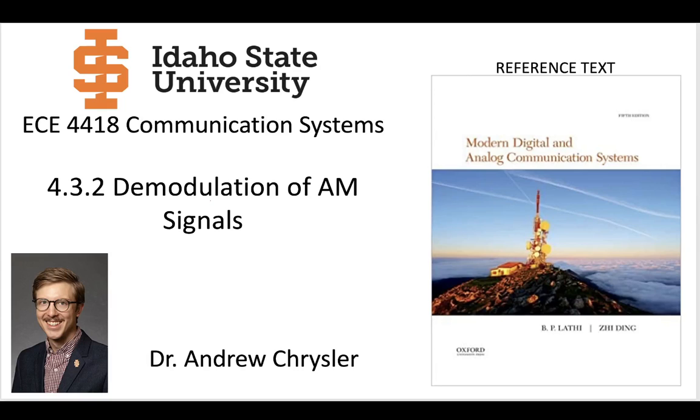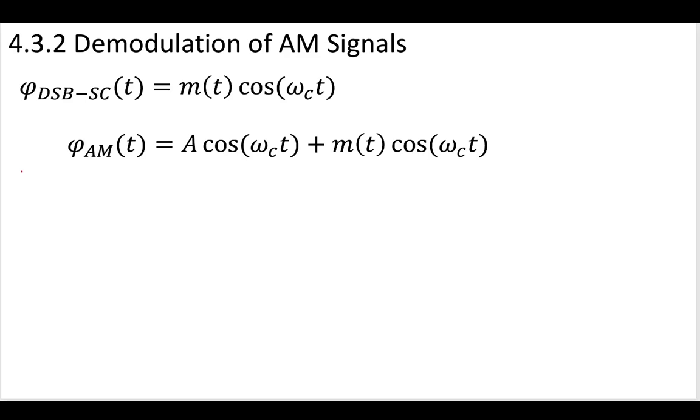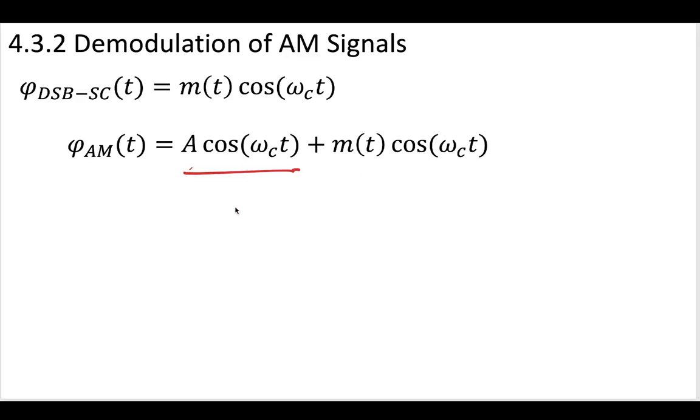So first, let's recall the difference between our DSBSC and our AM signals. In our DSBSC, we do not add any of this extra carrier wave. There's none of this extra carrier wave with a constant amplitude. In AM, we do have this - we've added this extra carrier. And for the AM schemes, it's clear that coherent modulation could work. And we know that it could work because both these terms have this cosine omega C wave. Based on what we saw for DSBSC, we know that if we could take this AM wave and then at our receiver multiply it again by some term like this with our carrier frequency, that could give us our original message back.